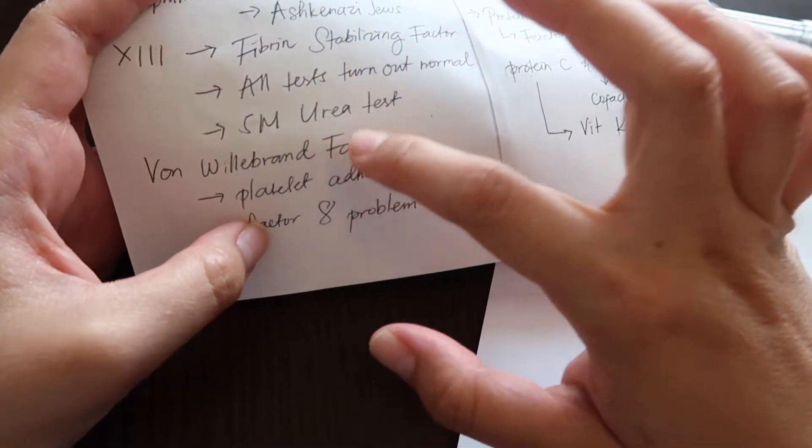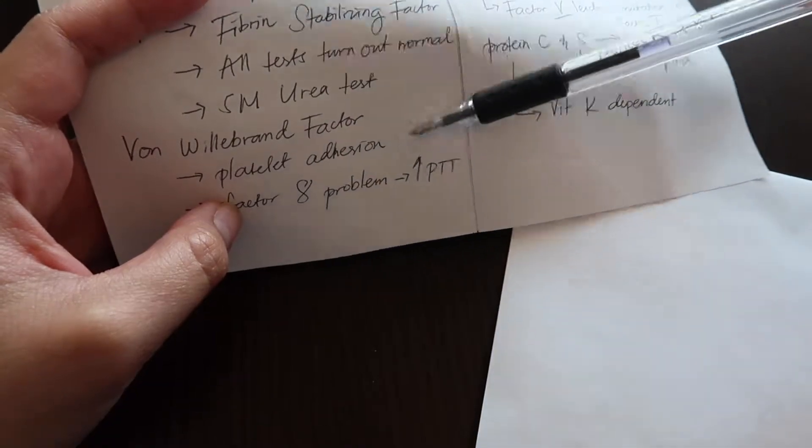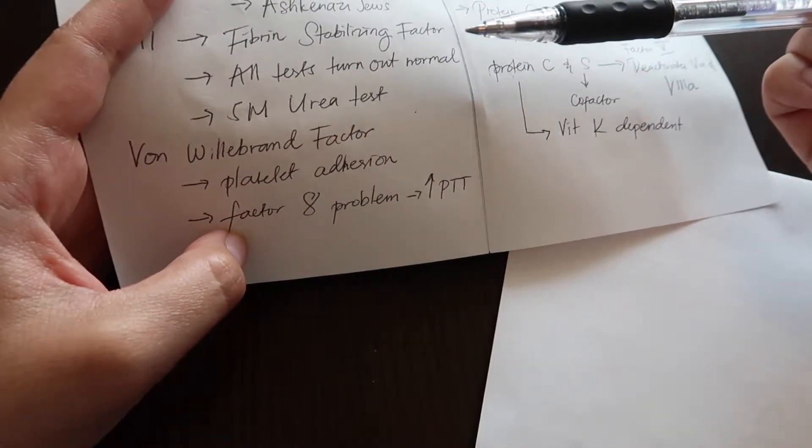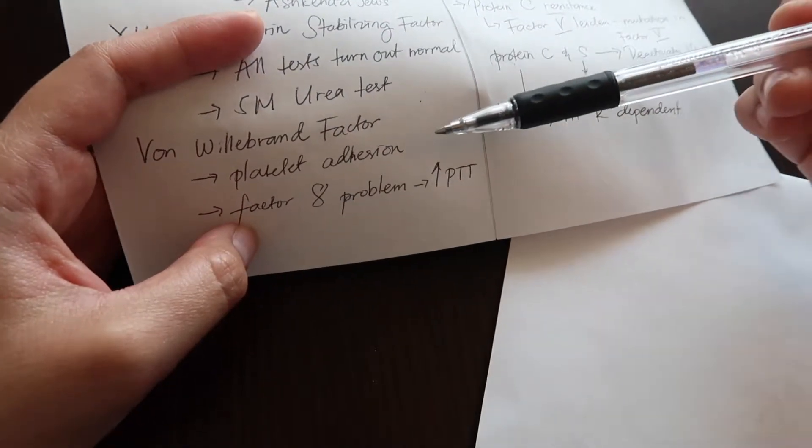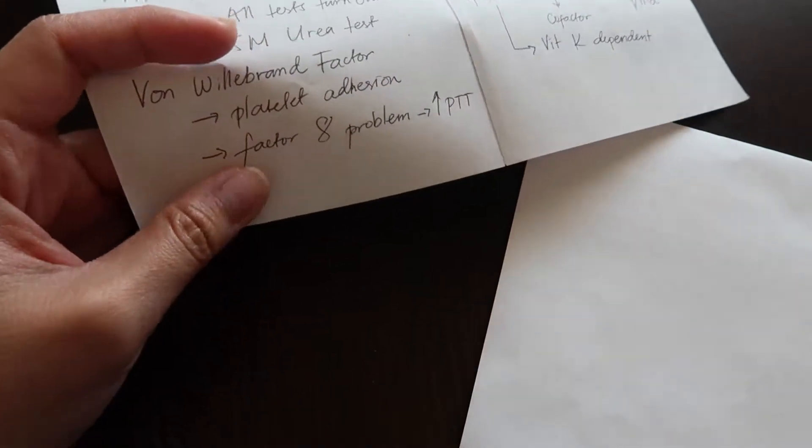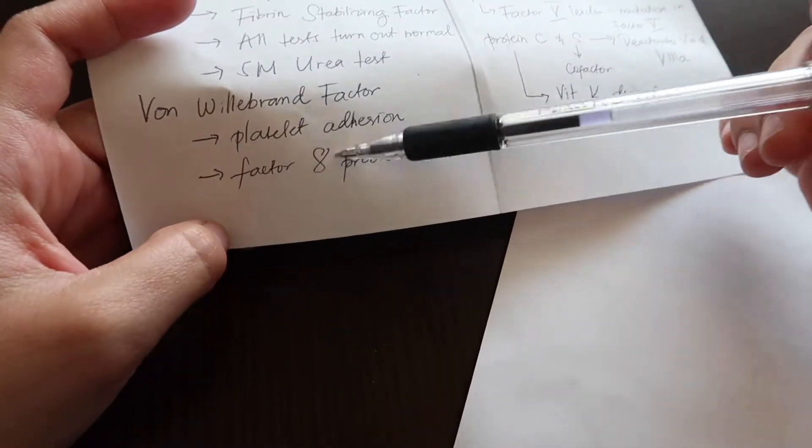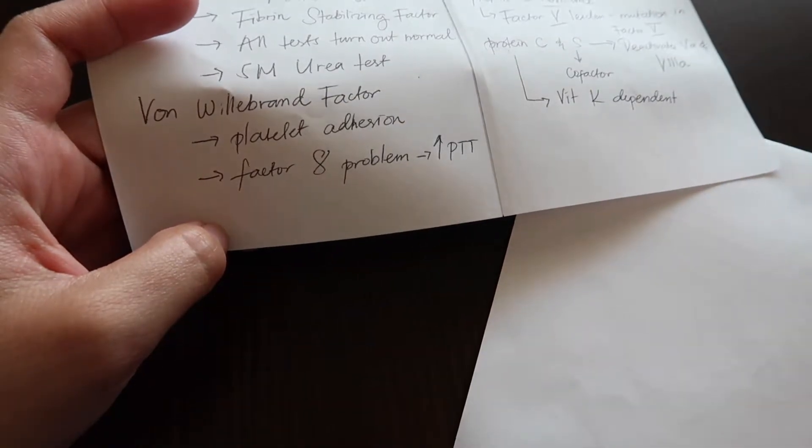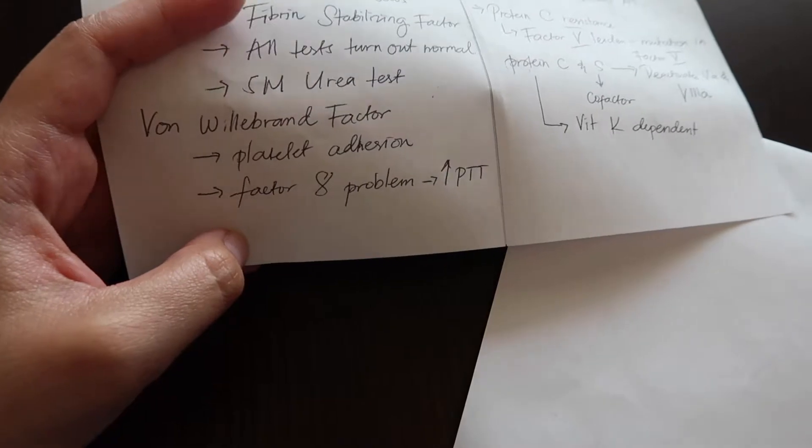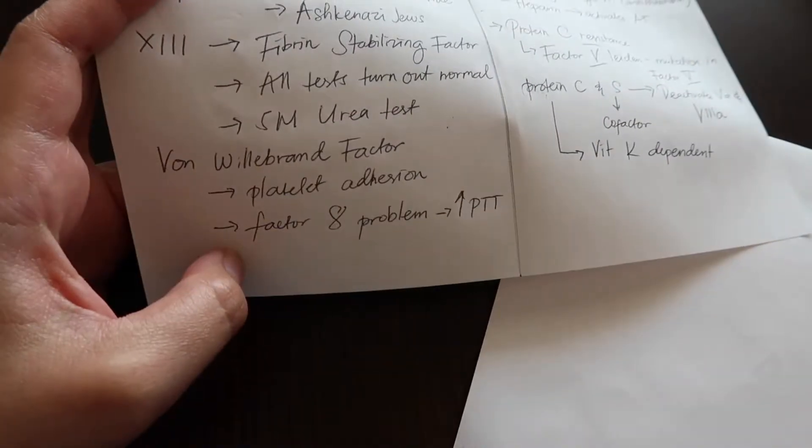Von Willebrand factor disease is very complicated. There's a lot of tiers to this disease, but basically it is involved in platelet adhesion because Von Willebrand factor functions to make sure that your platelets are attached to each other during the clotting process. It makes sure it's sticking to where it should be sticking. Also, it's responsible for carrying around factor 8. So if you have a problem with Von Willebrand factor, your factor 8 will have a problem too because it's not going to be able to go around effectively. Von Willebrand factor carries factor 8 with them and makes sure they're effective. Without Von Willebrand factor, you're going to have a factor 8 problem, so you're going to have elevated PTT as well.